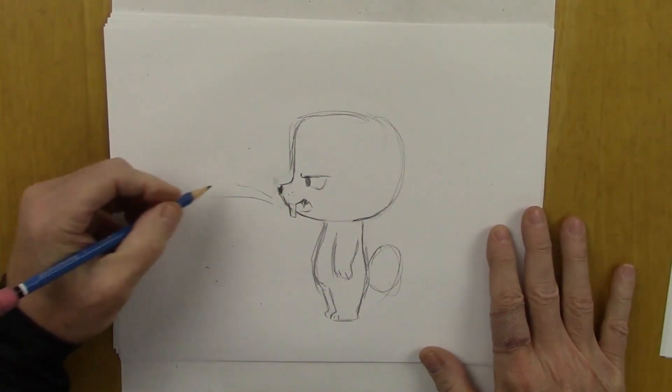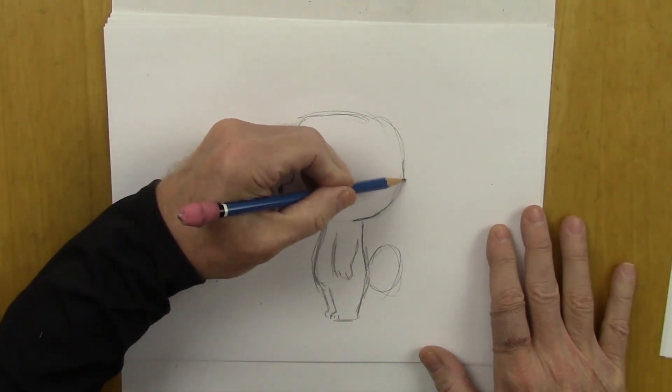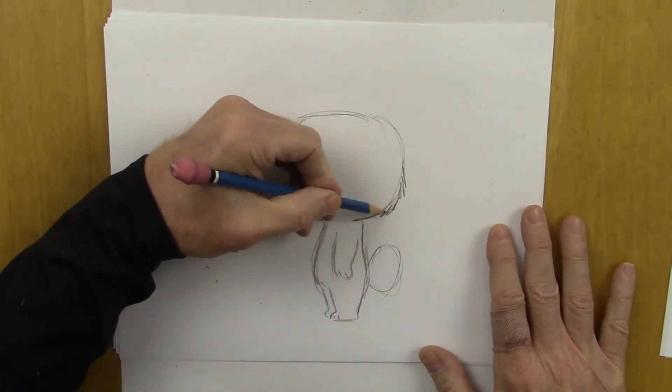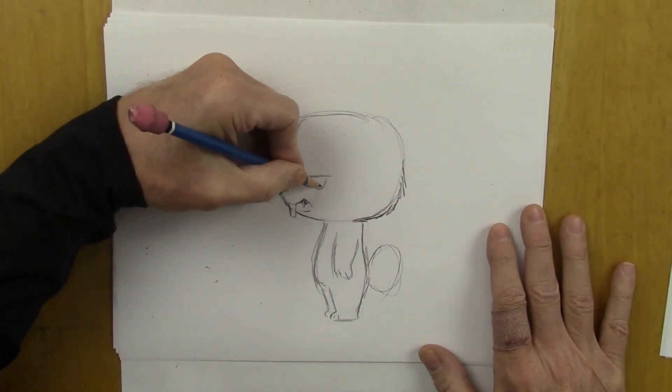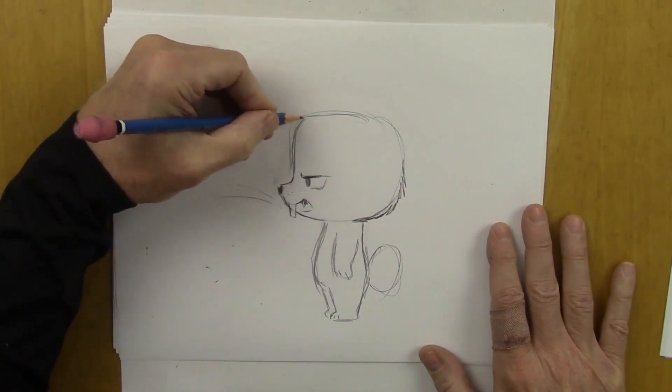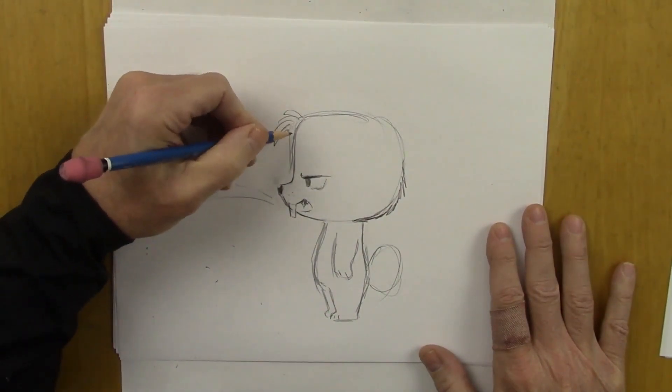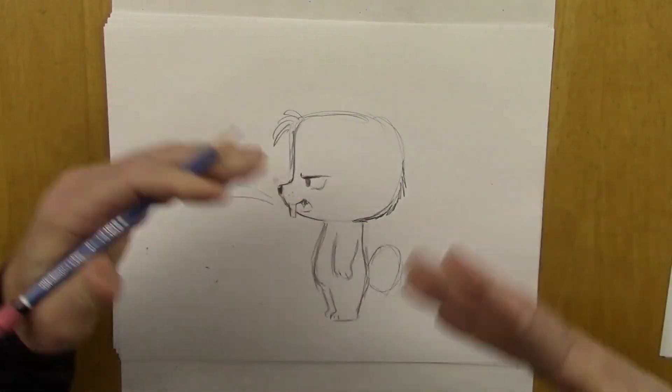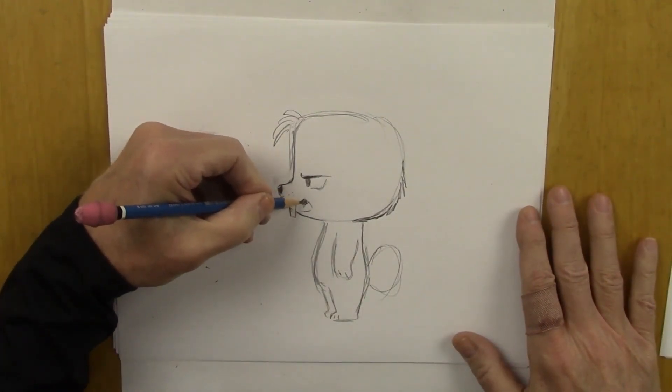A couple of whiskers. Now, let's fuzz this out and darken the top. Make some hair come out here because it kind of roughs him up, makes him look not so composed.